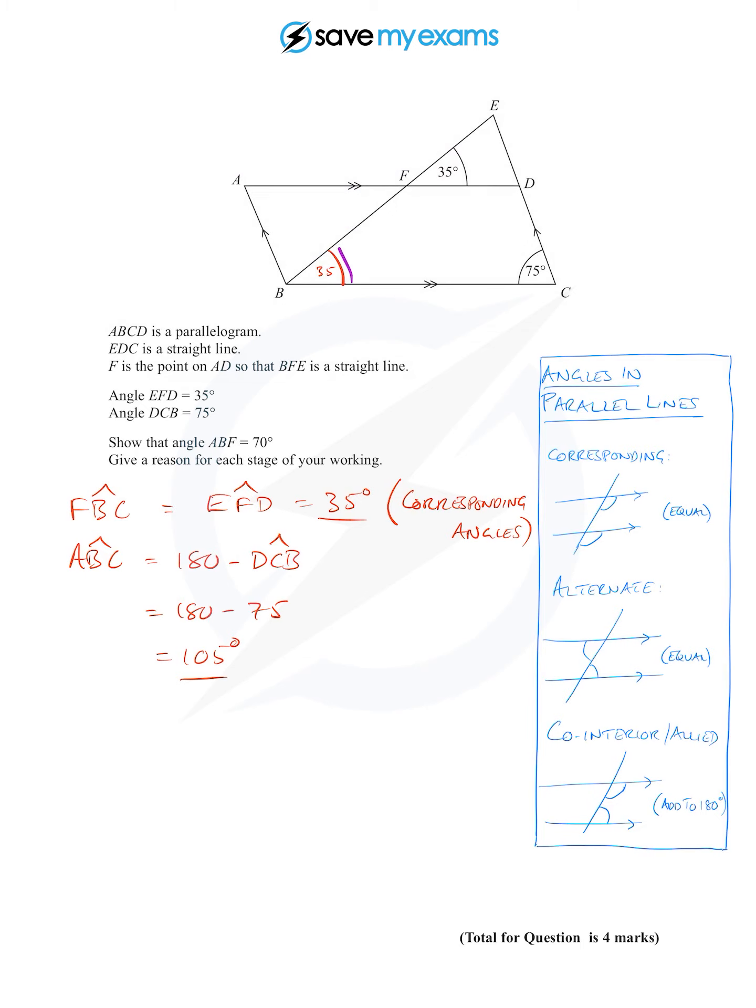Now we need a reason for that, and the reason we said for that was that they are, well, I'm going to call them allied angles because of course that's shorter to write. They add up to 180. In other words, one is 180 minus the other, which is what I've said here.